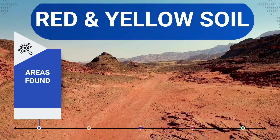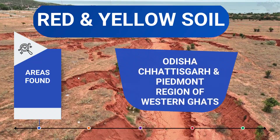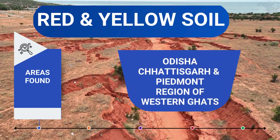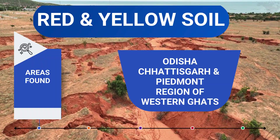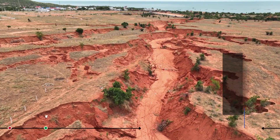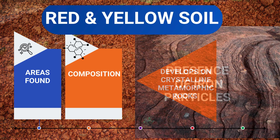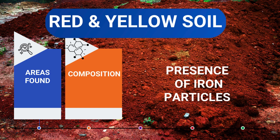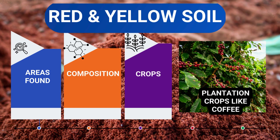The next type of soil is Red and Yellow Soil. Found along Odisha, Chhattisgarh and the Piedmont region of Western Ghats, this soil develops on crystalline metamorphic rocks. It has the presence of iron particles, and this soil supports cultivation of plantation crops like coffee.